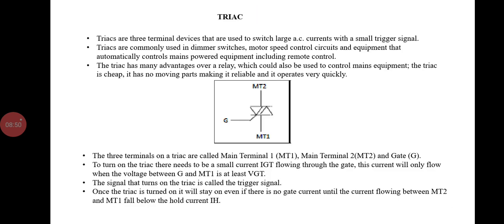Next one is the triac. The triac is a three-terminal device used to switch large AC currents with a small triggering signal. Triacs are commonly used in dimmer switches, motor speed controls, and circuits and equipment that automatically control mains-powered equipment including remote controls. The three terminals on the triac are main terminal T1, main terminal T2, and gate. To turn on the triac, there needs to be a small current IGT flowing through the gate, which flows when the voltage between G and MT1 is at least VGT. Once the triac is turned on, it will stay on even if there is no gate current, until the current flowing between MT1 and MT2 falls below the holding current.